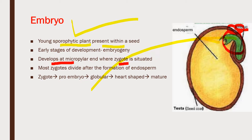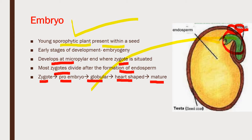Most zygotes divide after the formation of endosperm, because endosperm nourishes the developing zygote. This zygote gives rise to pro-embryo, then globular embryo, then heart-shaped embryo, and finally it turns into mature embryo.